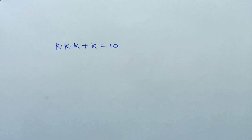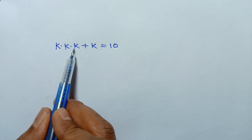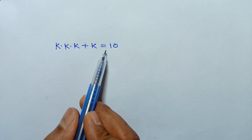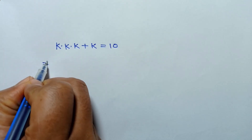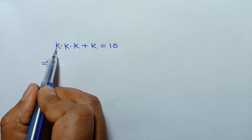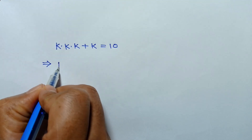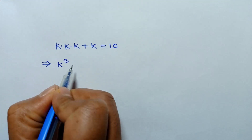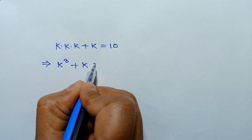Hi everyone. In this video I am going to show how to solve this equation k times k times k plus k is equal to 10. This k times k times k can be written as k cube plus k is equal to 10.